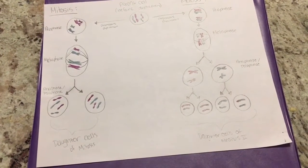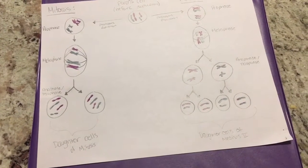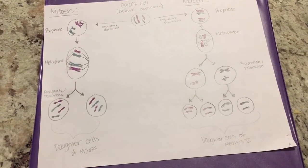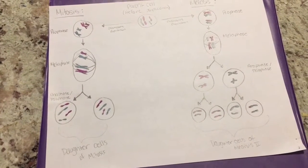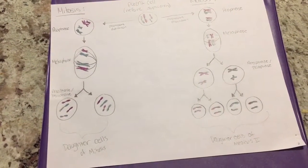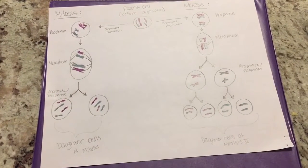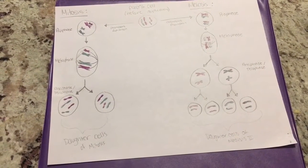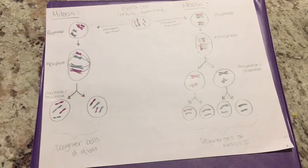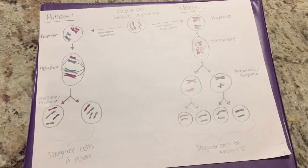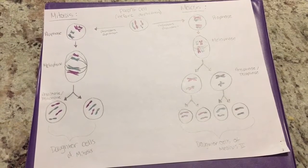In metaphase, the centromeres of the chromosomes help the chromosomes form a vertical line down the center of the cell, known as the metaphase plate. During anaphase and telophase, the daughter chromosomes attach to their respective ends of the parent cell, the spindle dissolves, and nuclear membranes form around the separated daughter chromosomes.